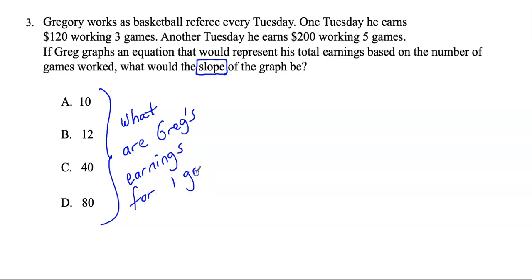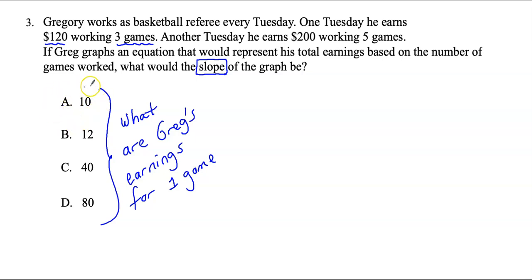That's what our answer choices represent — does he make $10 per game, $12 per game, $40 per game, or $80 per game? It says if he works 3 games, he makes $120. Would it make sense that he makes $10 per game? If he makes $10 per game and refs 3 games, $10 times 3 is $30 — that's not enough money. So A is gone.